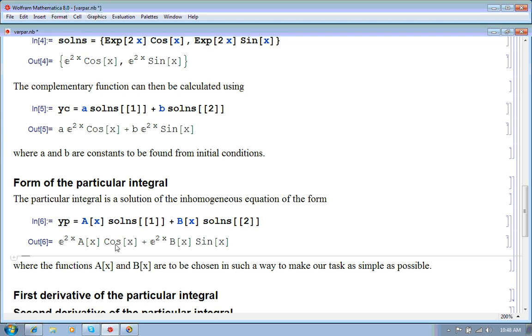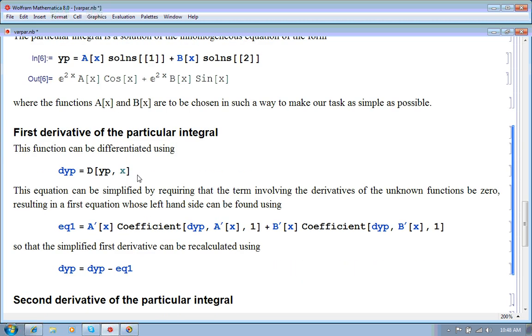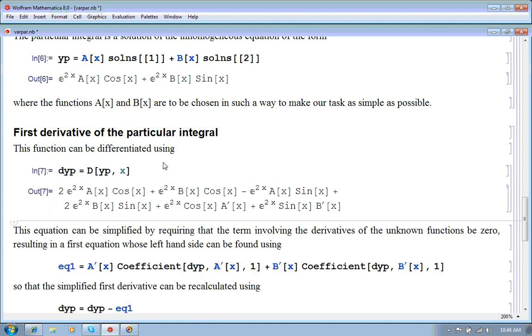So, we want to now put this in where we have to find the functions A of x and B of x. We choose them in such a way that our task is as simple as possible. So, let's calculate the first derivative of the particular integral. So, we differentiate it with respect to x and there we have it here. And you see it's already quite complicated.